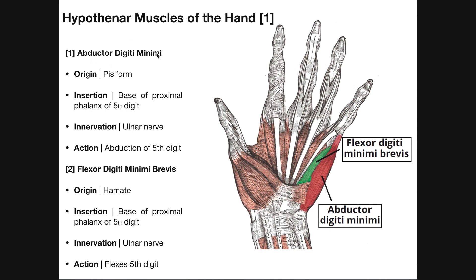The first muscle we're going to look at is abductor digiti minimi. The name itself should tell you what the muscle does — digiti minimi is the fifth digit, so it should abduct the fifth digit. We see that muscle here in red. Its origin is the pisiform, one of the carpal bones. The fibers extend toward the fifth digit and insert at the base of the proximal phalanx of the fifth digit. So we're going to see abduction of the fifth digit, mainly at the carpometacarpal joint. This muscle does not insert on the distal or middle phalanx, so movements will be mainly at the carpometacarpal joint. Like all three hypothenar muscles, it's innervated by the ulnar nerve.